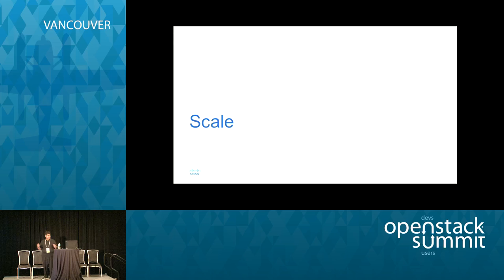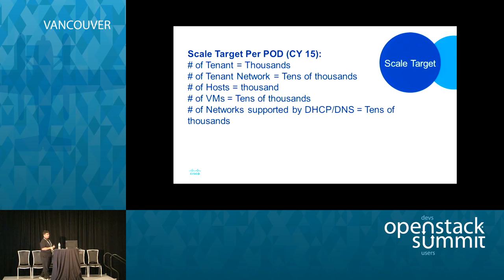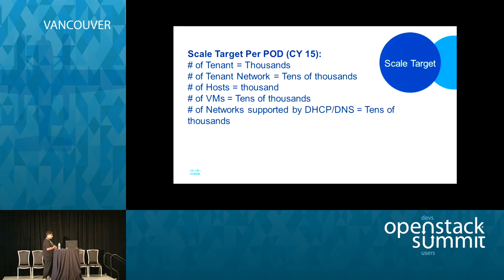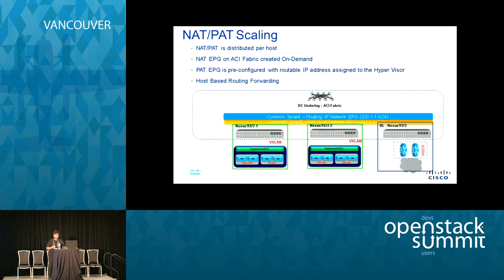I've talked about performance optimization — now let's quickly go through scale. There are a number of scaling parameters we are looking at. I didn't put any concrete numbers here because this is going through engineering validation right now — hopefully at the next summit I can share concrete numbers. From a scale standpoint, we are looking for thousands of tenants, tens of thousands of tenant networks, and tens of thousands of VMs. Each of these components needs to be scaled.